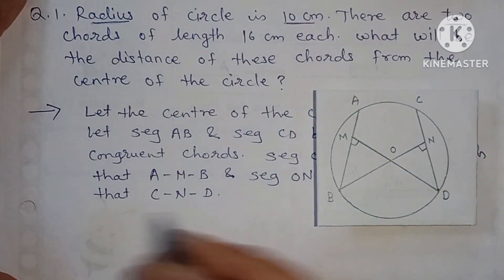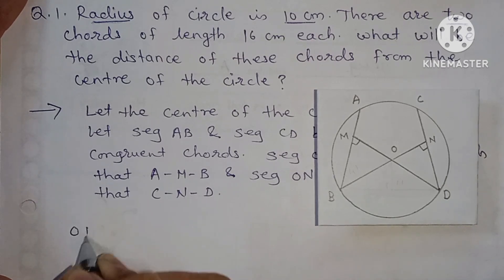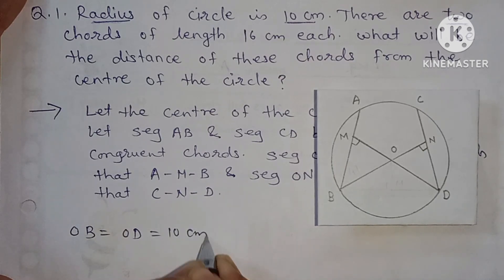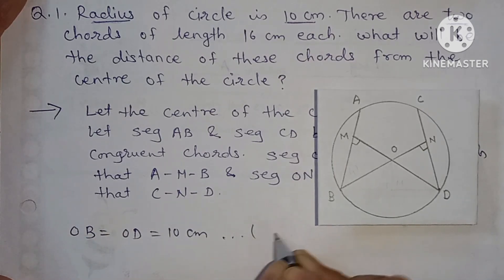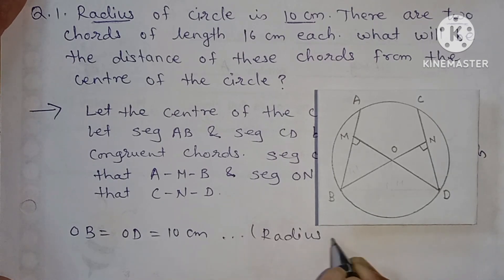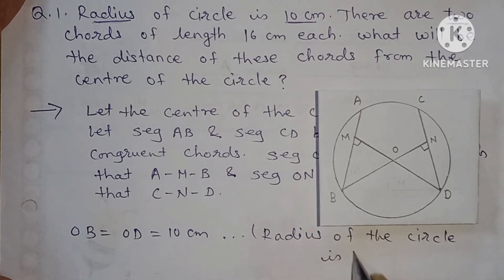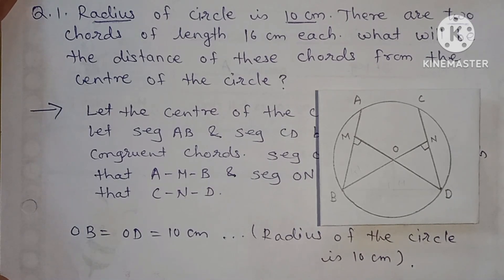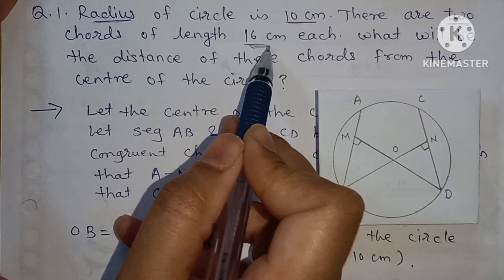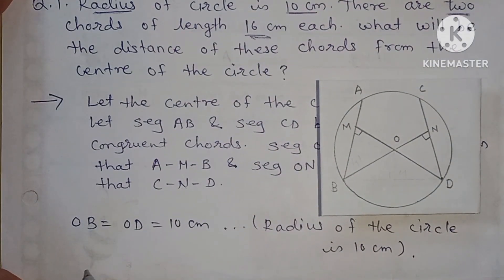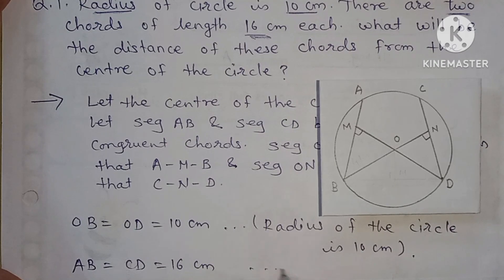From the given information: radius OB and OD are the radii, so OB = OD = 10 centimeters. The chords are also given as 16 centimeters, so AB = CD = 16 centimeters.